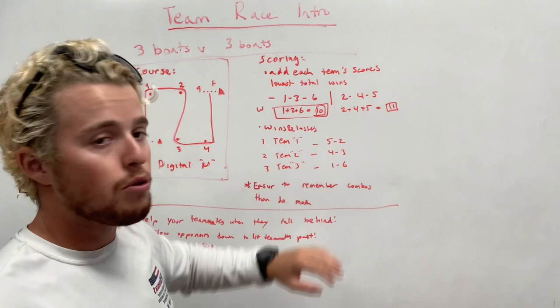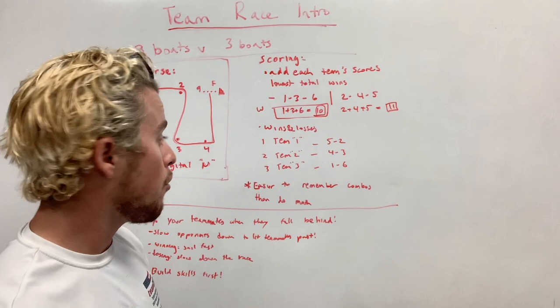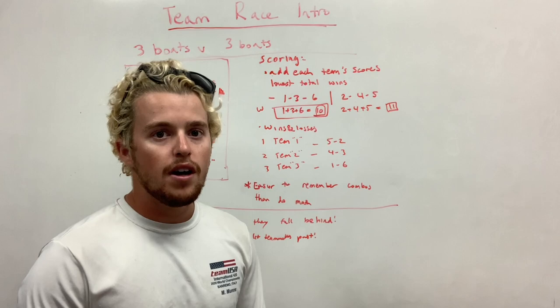At the end, everyone's ranked by their win and loss record. So team number one has won five races and lost two, team number two has won four and lost three, and the team in third place has won one race and lost six races.